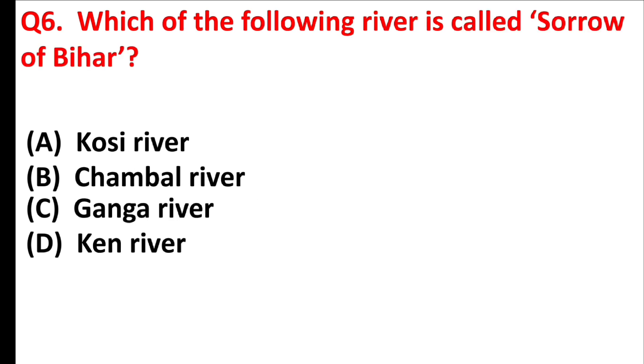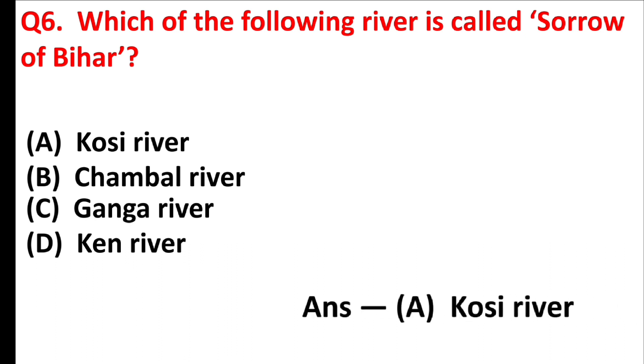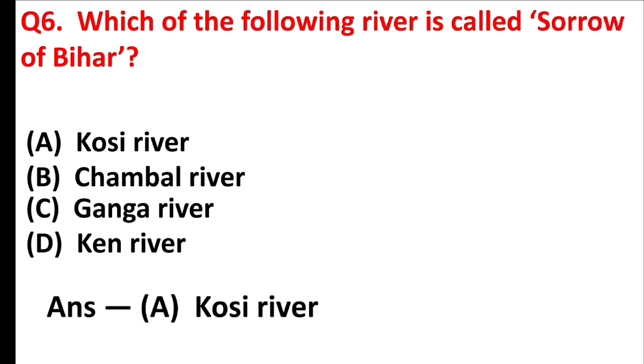Which of the following rivers is called the Sorrow of Bihar? Answer is Option A: Kosi River.